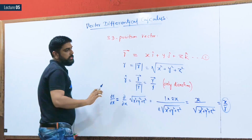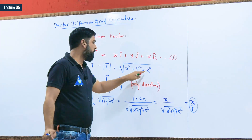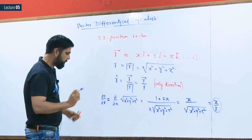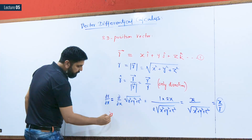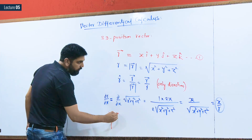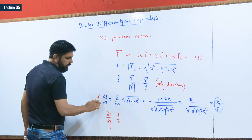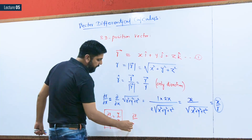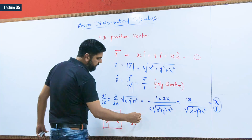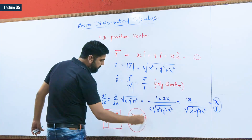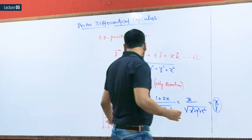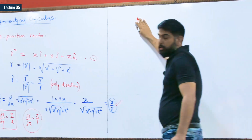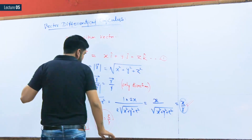Since the expression is symmetric in x, y, and z with equal powers, we can directly write: ∂R/∂y equals y/R and ∂R/∂z equals z/R. So our three results are: ∂R/∂x = x/R, ∂R/∂y = y/R, and ∂R/∂z = z/R.